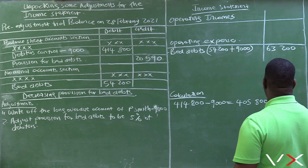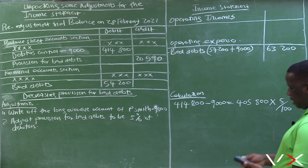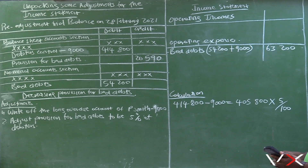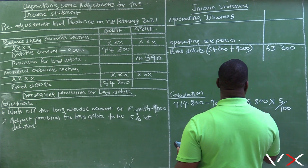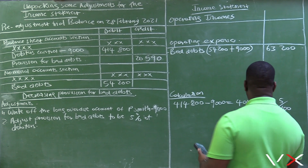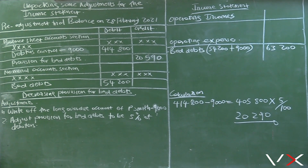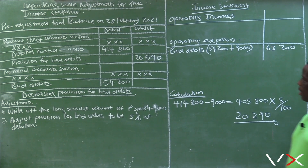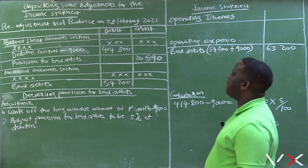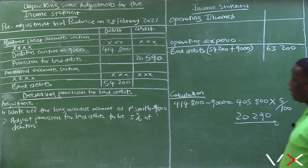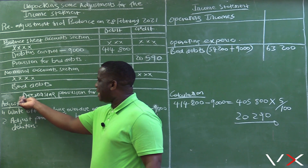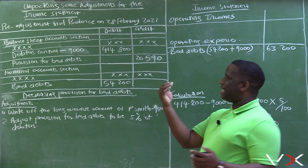5% of 405,800 gives us 20,290. So provision for bad debts should be 20,290. Let us look at the current balance for provision for bad debts — it is currently sitting at 20,590. But according to the adjustment, 5% of debtors is now 20,290, which suggests we need to decrease provision for bad debts.